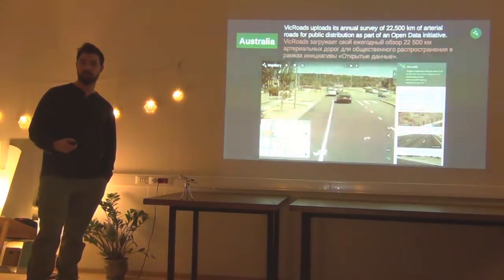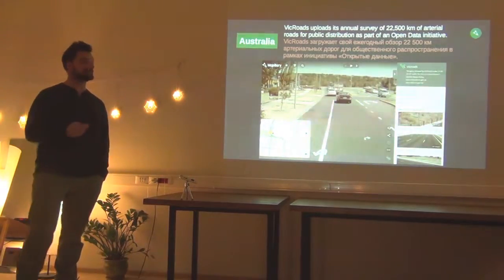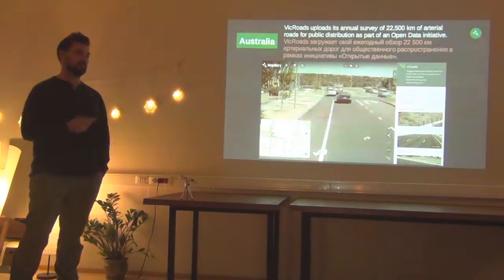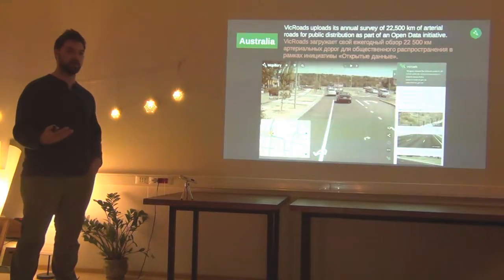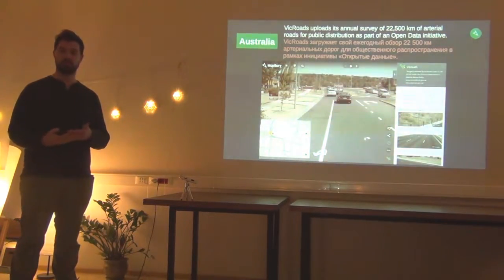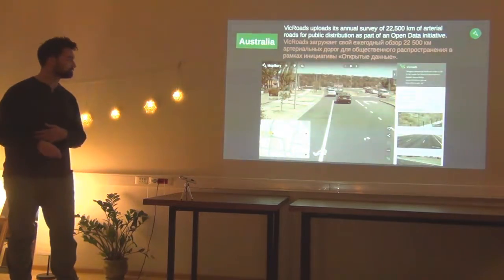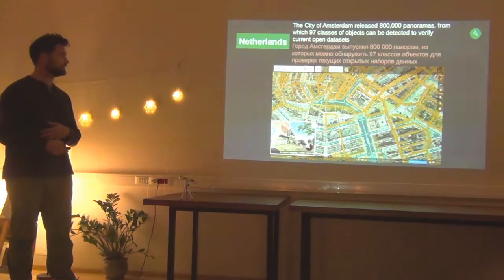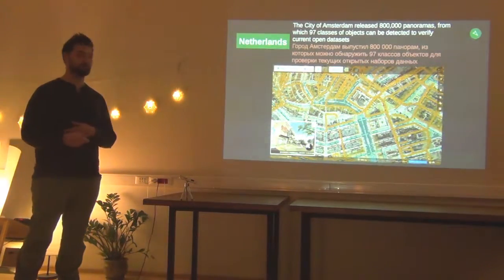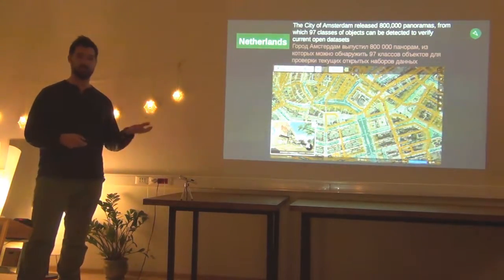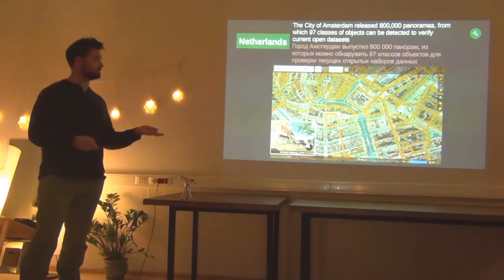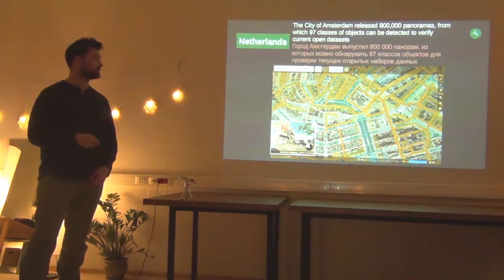In Australia, the state of Victoria contributed around 22,000 kilometers of images to our map. They do this each year, so next year they will again add photos in the same location, and we can see changes over time. Amsterdam, the city uploaded 800,000 360-degree images from high-quality cameras, so now the entire city of Amsterdam is on Mapillary where you can see the images and use them to add new data.